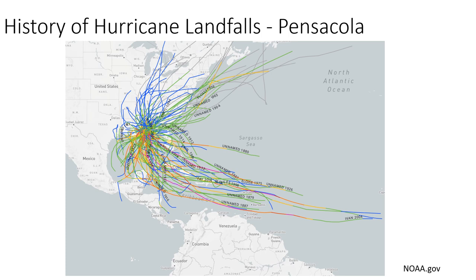Gulf coastal regions are really prone to hurricanes. NOAA put up a neat site where you can put in a city and see the historic landfalls of hurricanes. Here with Pensacola entered, these are all the historic hurricanes that moved into Pensacola. Gulf coastal regions just get hammered by hurricanes.